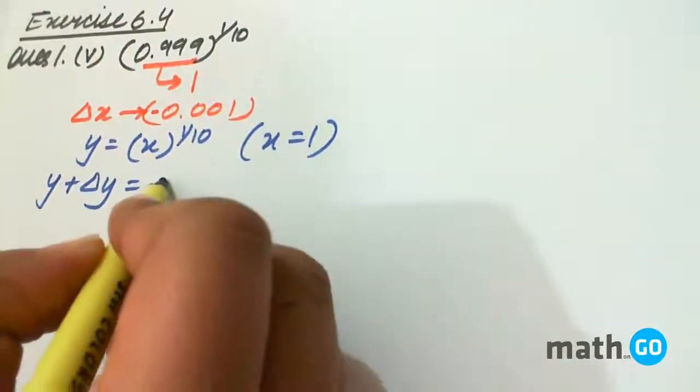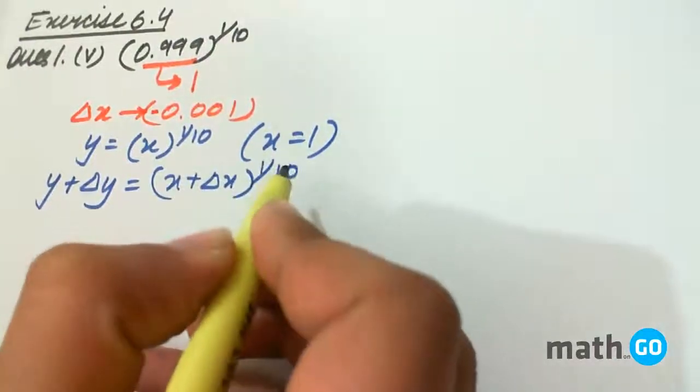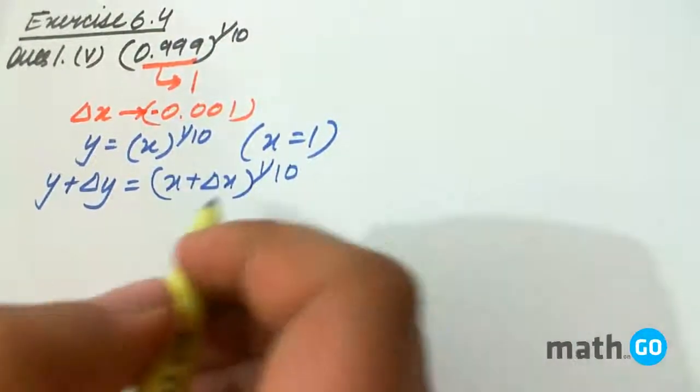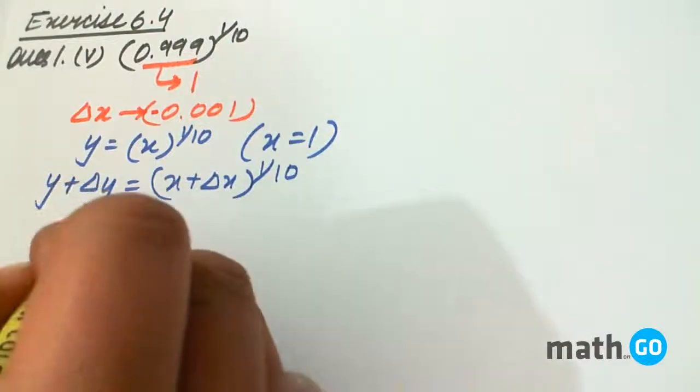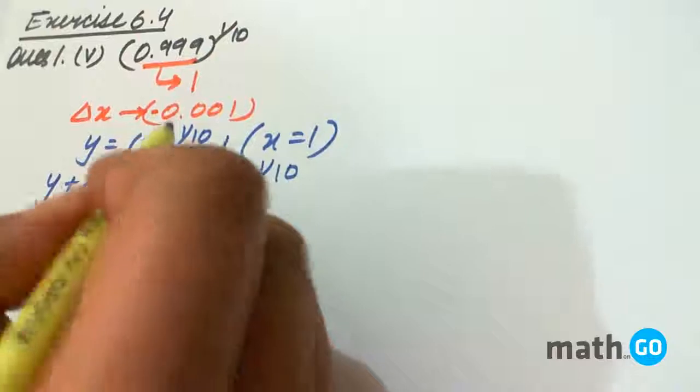Considering this x plus delta x to the power 1 by 10. Together what do we need to find is delta y because y is simply 1 if we put in this expression.